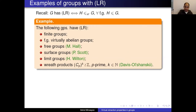The last example has a different flavor: the generalized lamplighter group. You take a cyclic group C_p raised to the power k, take the wreath product with ℤ, and this has property LR. This was proved by Davison or Shansky — it's not very difficult.